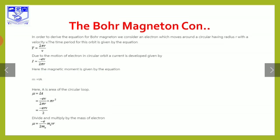In order to derive the equation for the Bohr magnetron, we consider an electron which moves around a circular orbit having radius r with velocity v. The time period for the orbital is given by the equation. The time period T is given by 2πr divided by v.